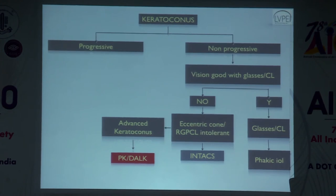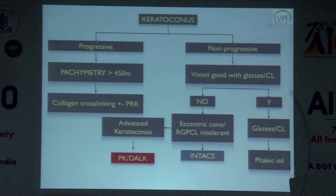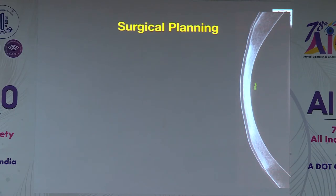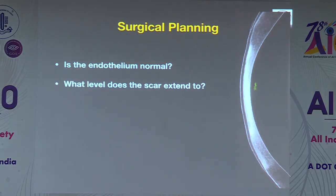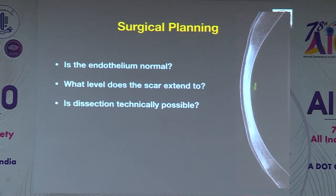Other considerations: patient age — between DALK and PK, outcomes are relatively similar in younger patients, but in older patients DALK tends to score over PK. Candidates for DALK include those with poor spectacle or contact lens corrected vision not amenable to cross-linking, those with a central scar, those unwilling to use contact lenses, and those with good spectacle vision in the other eye — as such patients prefer a definitive result.